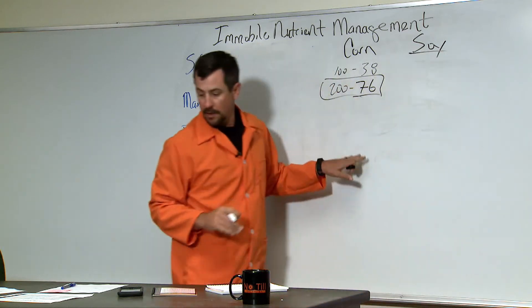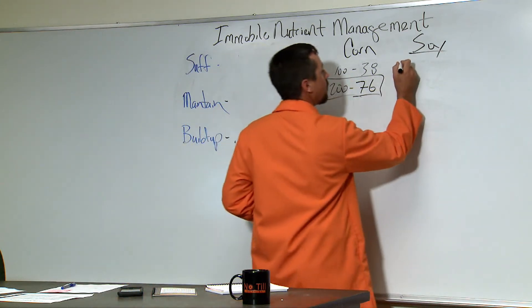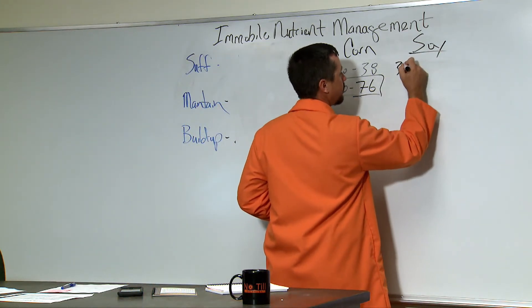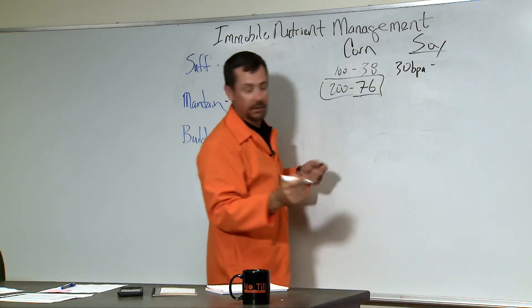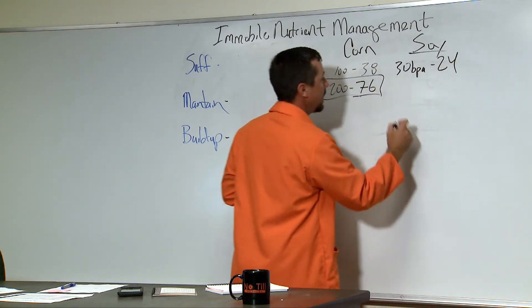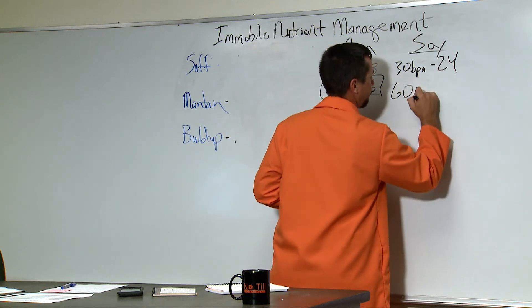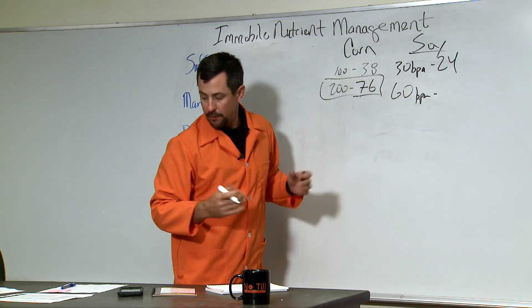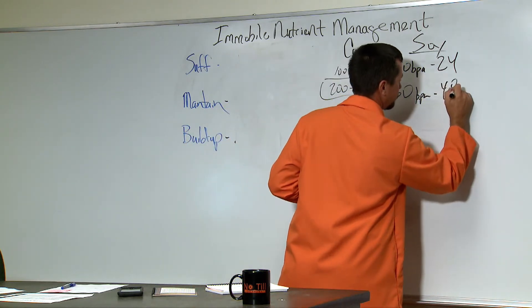On soybean, if you're growing a 30 bushel soybean crop, 30 BPA, you're going to remove approximately 24 pounds and a 60 bushel crop removes 48 pounds of phosphorus.